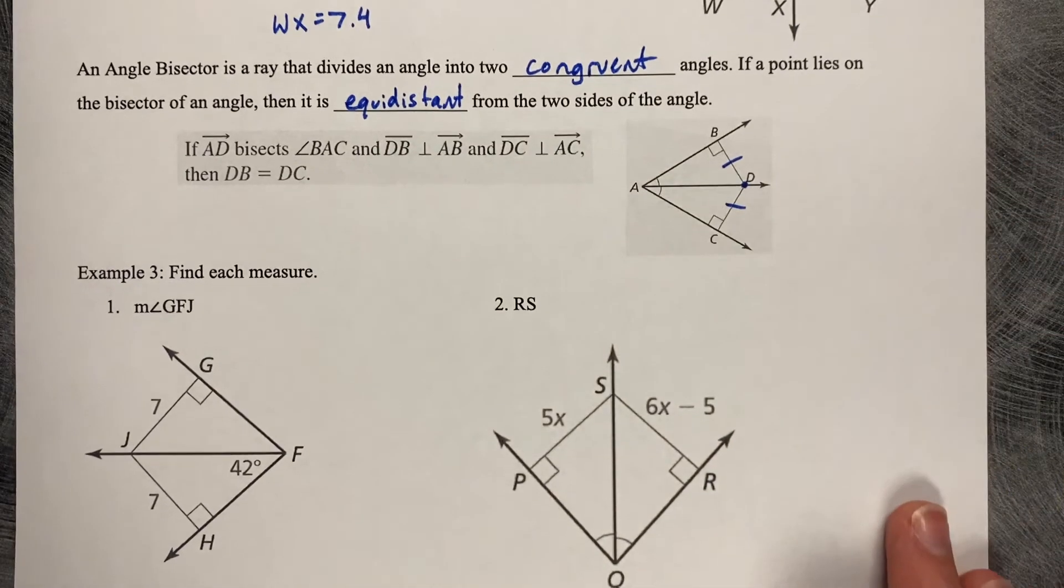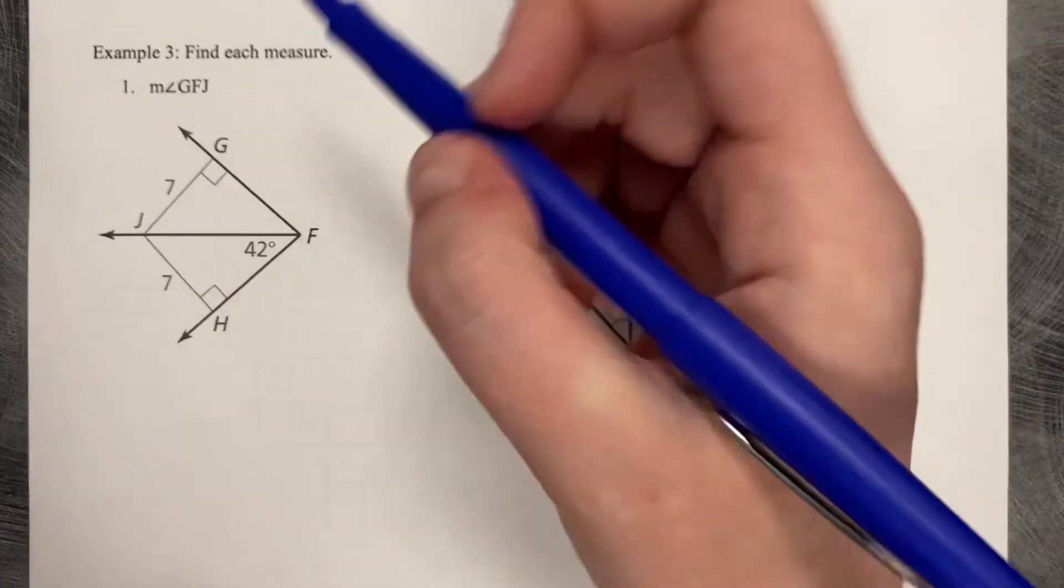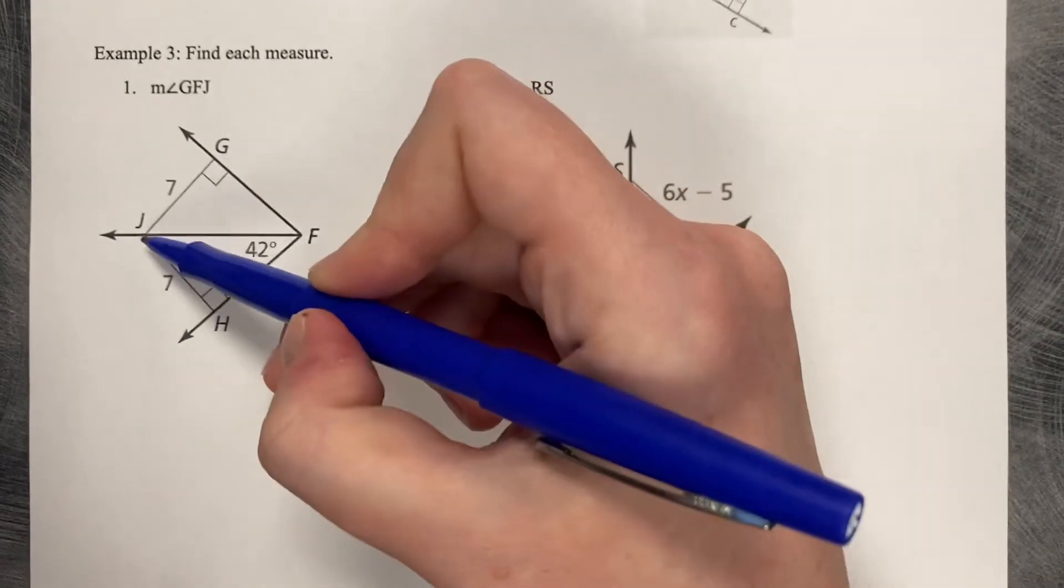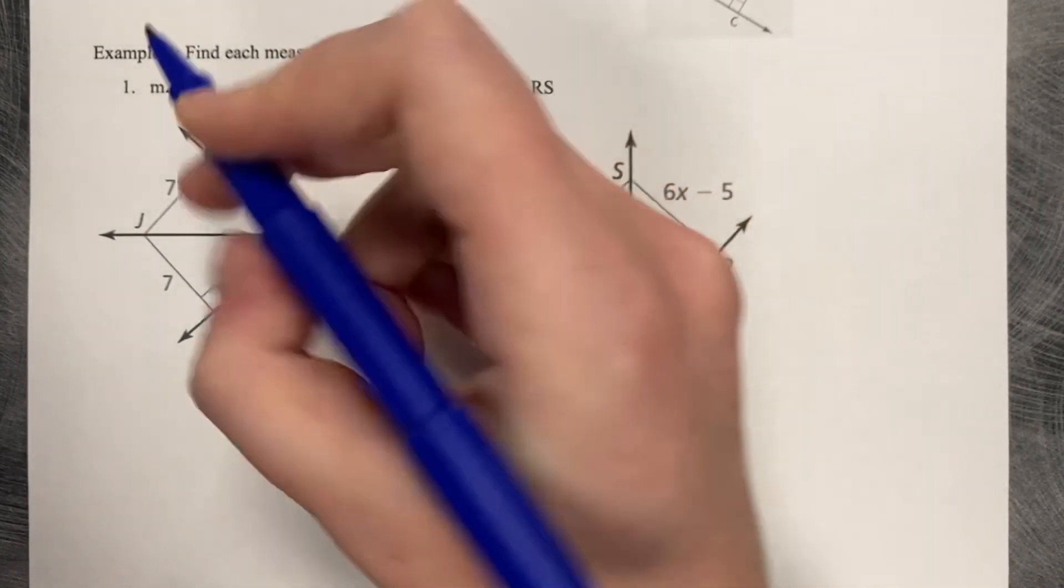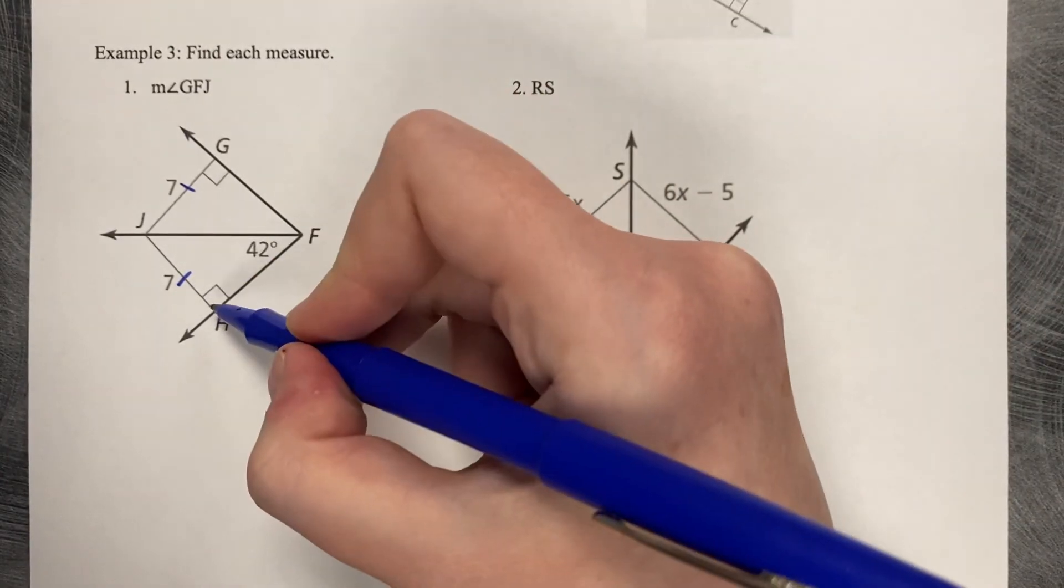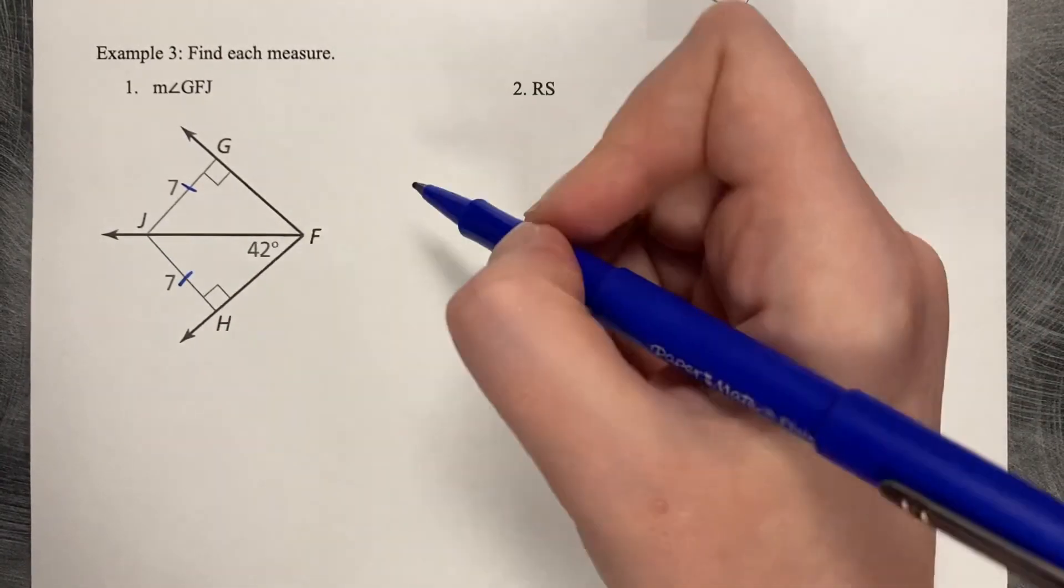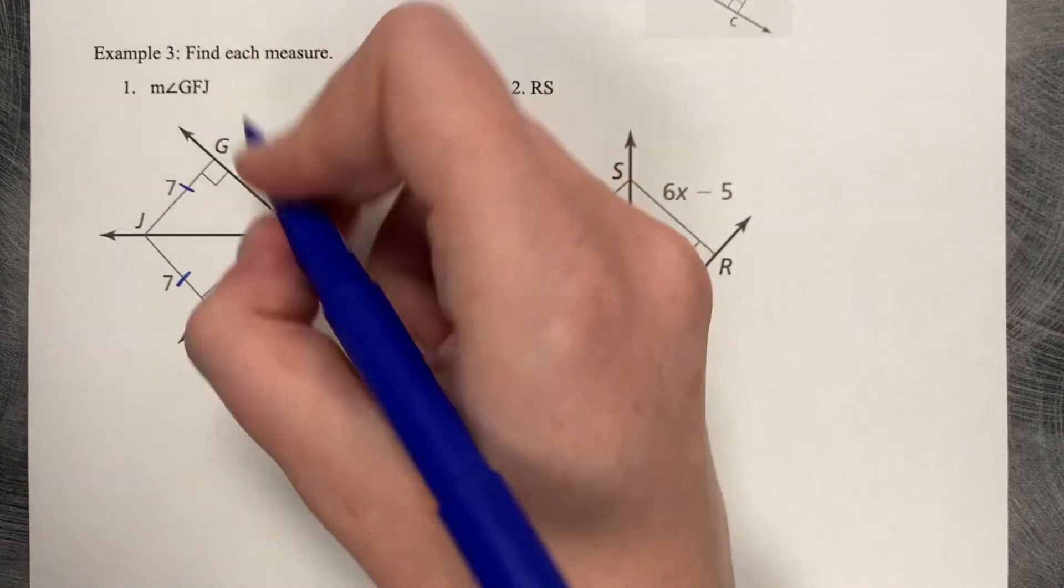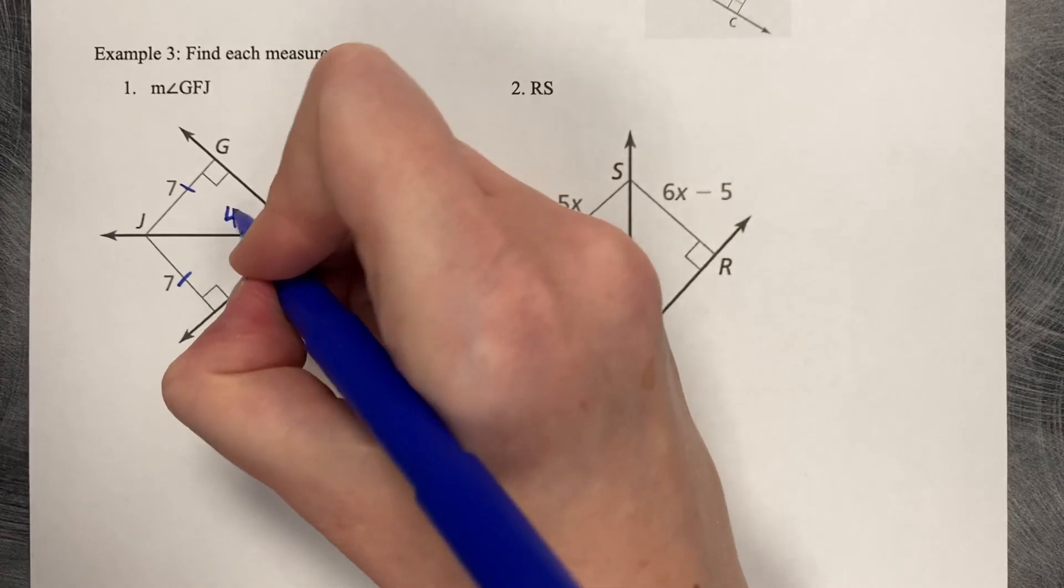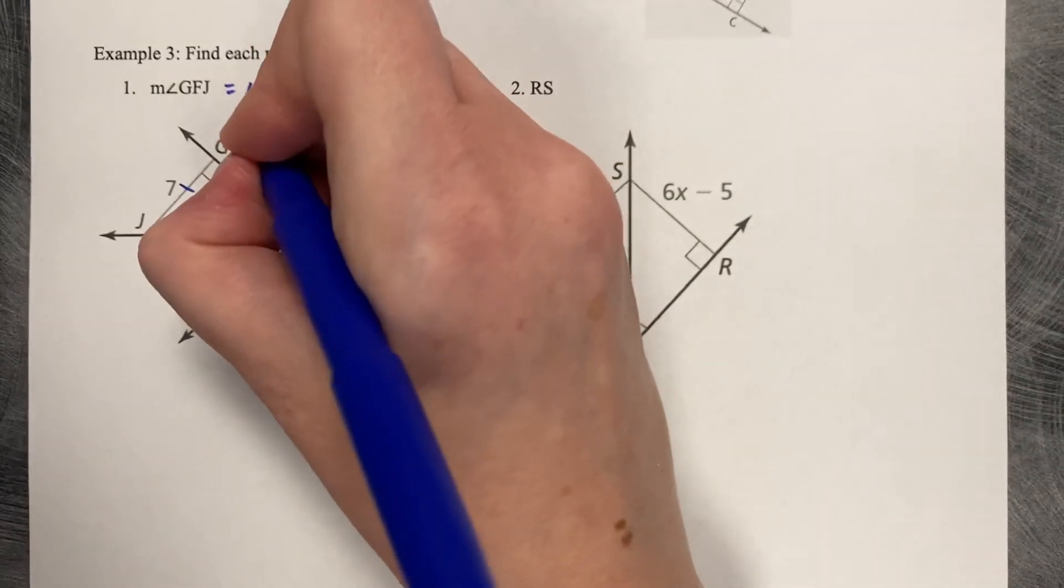Find each measure. Find the measure of GFJ. So if this is 7 and this is 7, that means that those two are congruent. They're on perpendiculars to the perpendicular bisector. This angle is 42, so that means that these angles must match, which means that that angle is also 42 degrees.